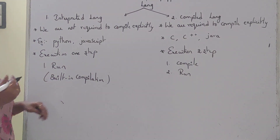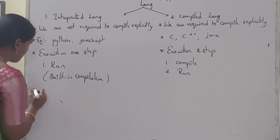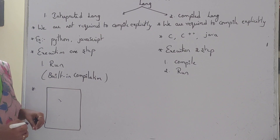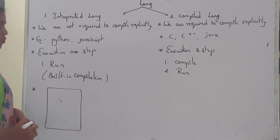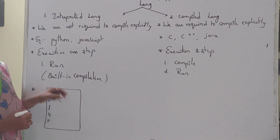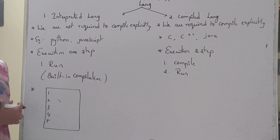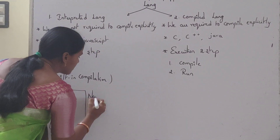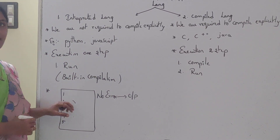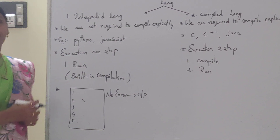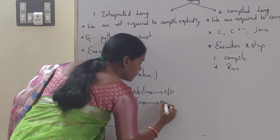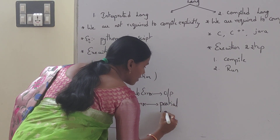For example, let's take one interpreted program. This program contains five lines of code — one, two, three, four, and five. If the program contains no errors, then it returns output. If the program contains any error at any line, then it returns a partial result.